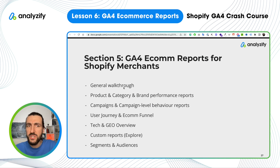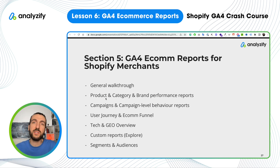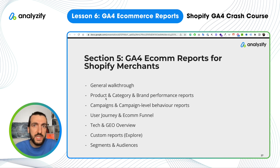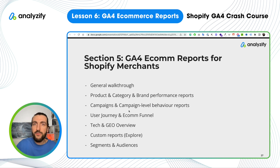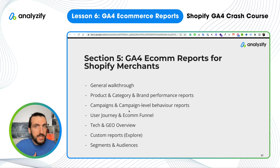So what will we cover? First, we will do a general walkthrough and then I will show you product, category and brand performance reports. You can see your product performances from a GA standpoint — you know the revenue, you know how many products you have sold. But GA4 can show you more than you would think. Maybe you have some products that receive so many views and engagements but not enough purchases. Then we will check campaign-level behavior reports. For instance, you could filter the whole GA4 for a specific Performance Max campaign and show all reports only for that campaign.